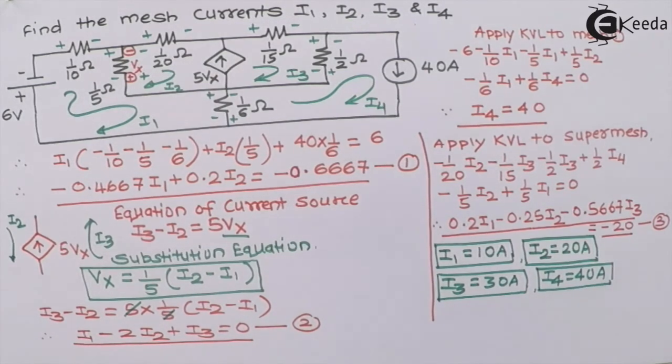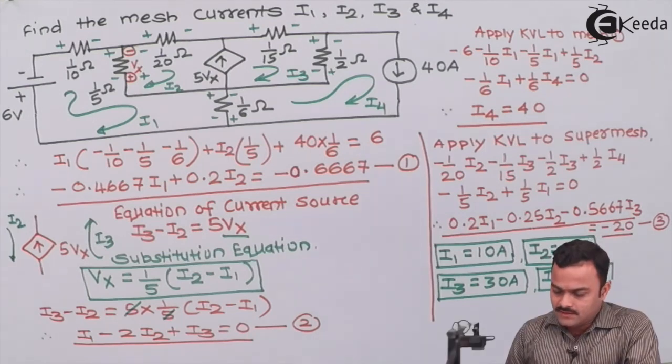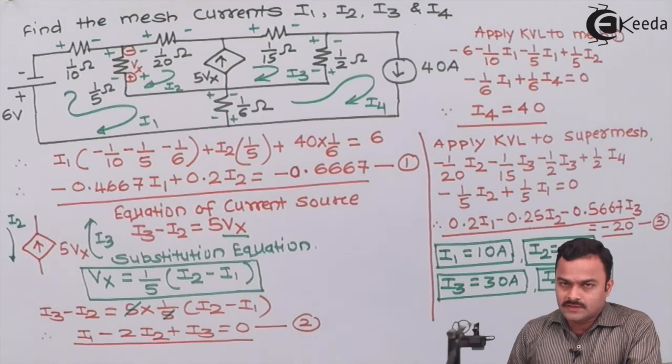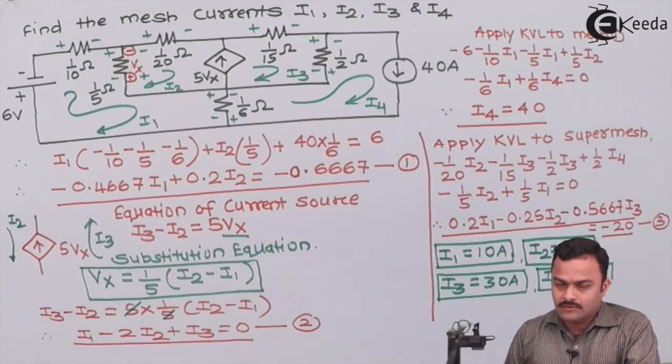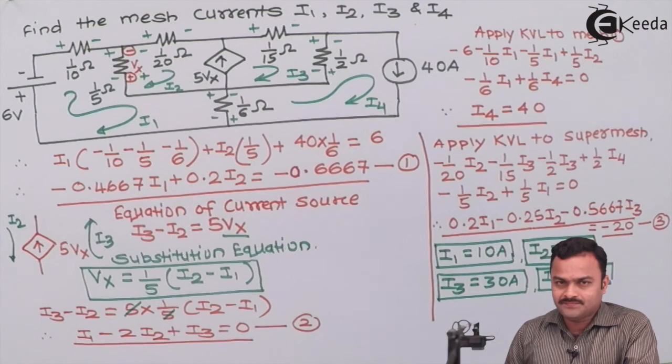So here we have solved a problem where 4 meshes were involved plus a combination of independent and dependent sources were there. And third, there is a current source between 2 meshes so supermesh concept is also covered in this problem. Thank you.